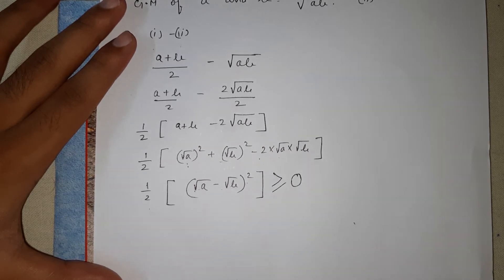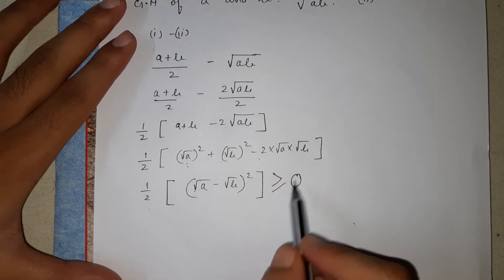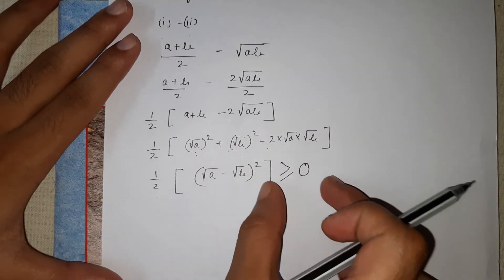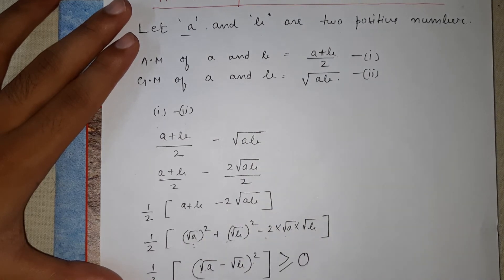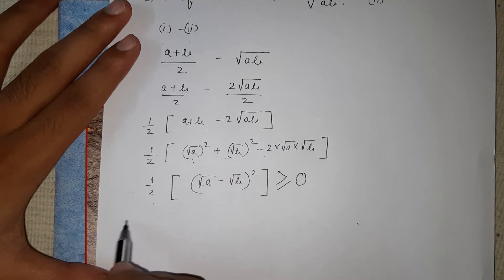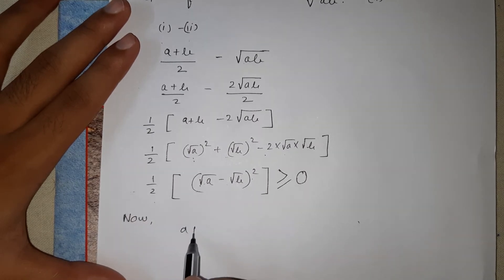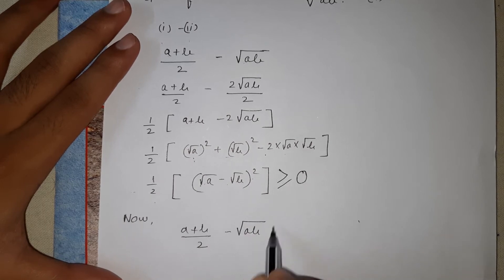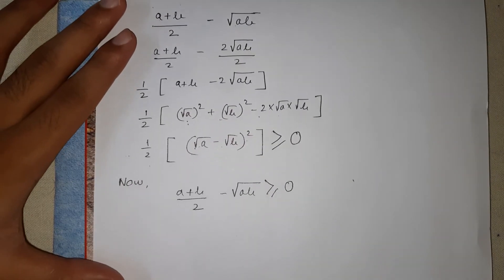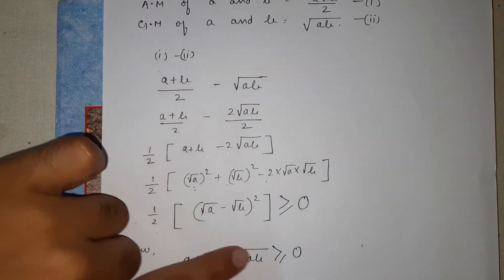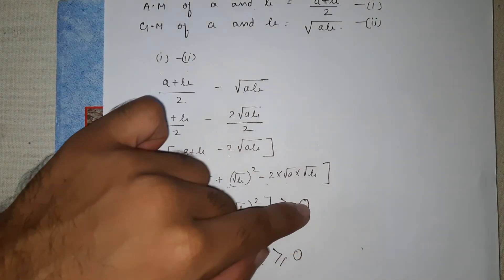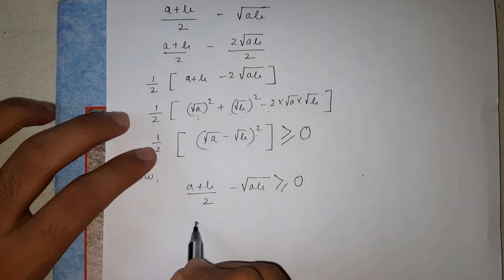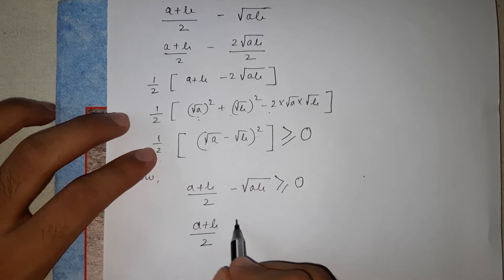(√a − √b)² is a positive value, and half of it will also be positive or zero. So it is always greater than or equal to zero. Since this part is greater than or equal to zero, we can also say that (a + b)/2 − √(ab) is greater than or equal to zero.